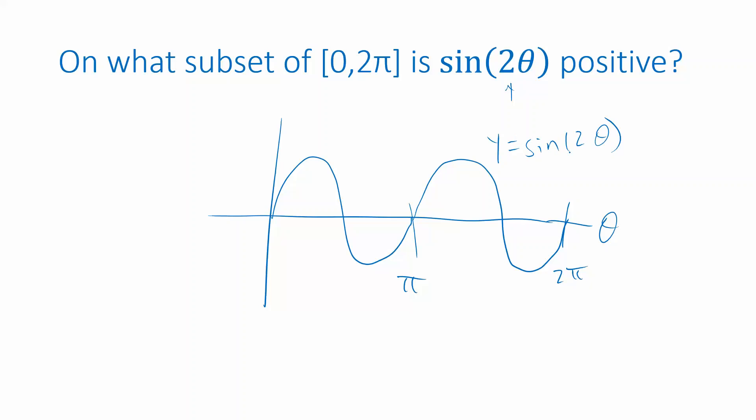So I want to know, where is this function positive? Well, it's positive if I plug in any of these theta values. So that's going to be between 0 and π over 2. And it's going to be positive if I plug in any of these theta values. So that's from π to 3π over 2. And I want to put together both of those sets for my answer. So I will take the union of those two sets. This is how we can express those two intervals together as a single set using set notation.